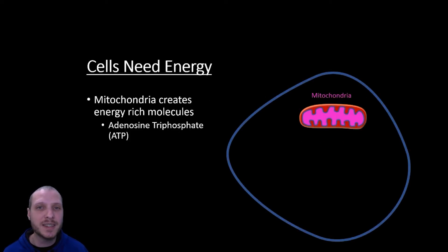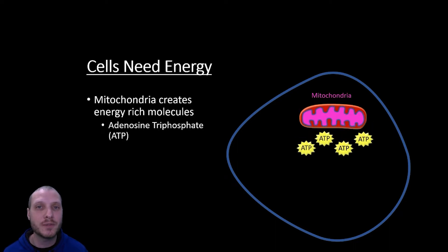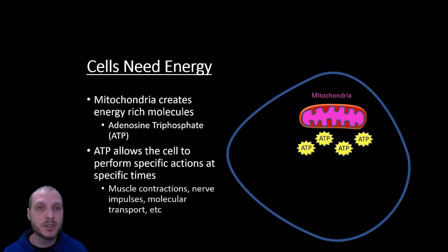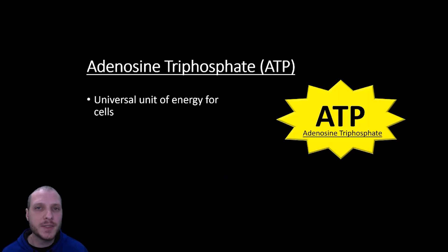Here we can see our mitochondria — the organelle responsible for producing the majority of the energy our cells are going to use. The specific molecule it produces is known as ATP, or adenosine triphosphate. ATP acts like a battery where we can store potential energy and use it at specific times for specific functions. Some examples include muscular contractions, nerve impulses, or transporting molecules around cells.